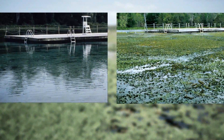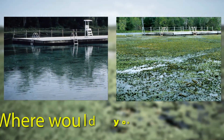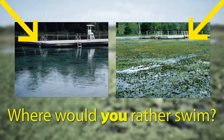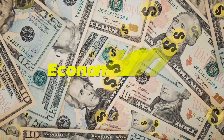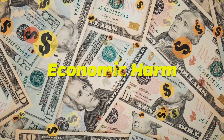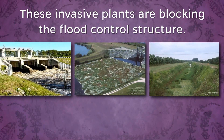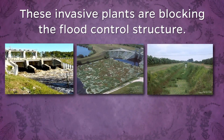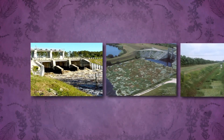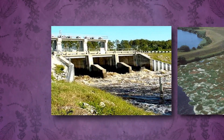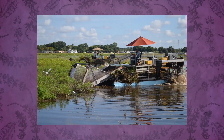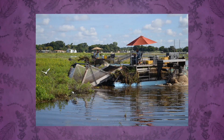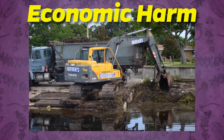Boating, swimming, fishing, and other water activities are made impossible by some invasive aquatic plants. Invasive plants can cause economic and/or ecological harm. Canals, ditches, and other flood control structures can become filled with invasive plants, which can cause flooding. Here's an example of a working flood control structure. This is an example of floating invasive plants blocking a flood control structure. Invasive plants can damage, block, or interfere with human activity, costing businesses and government money — this is economic harm.